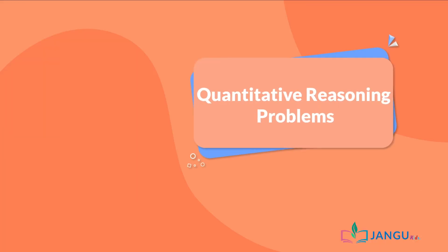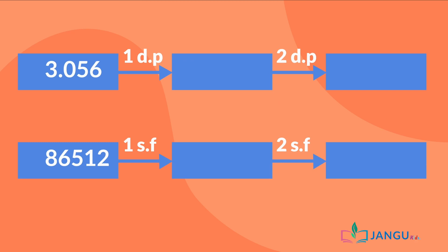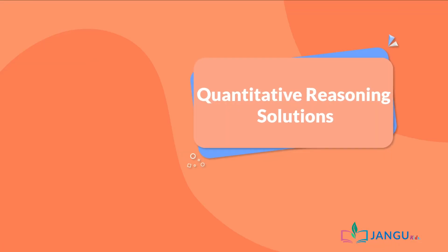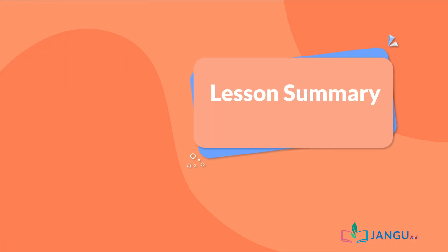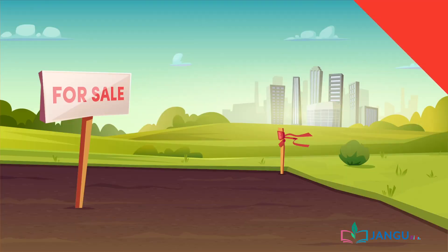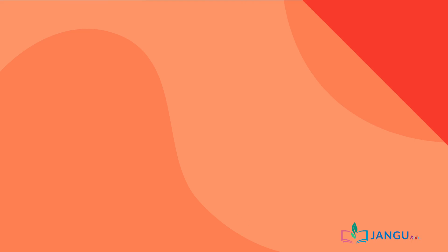Now, try these quantitative reasoning problems on your screen. Check your answers and compare with the ones on the screen. And this brings us to the end of the lesson. We've had a great time learning about approximating numbers to decimal places and significant figures. See you in the next lesson.